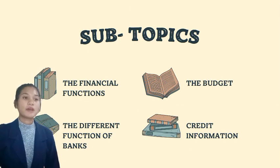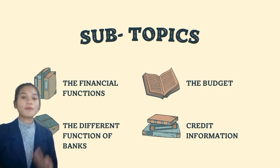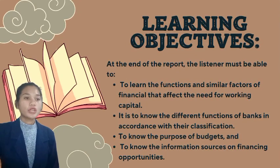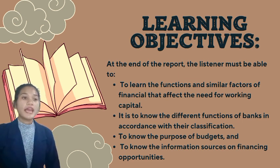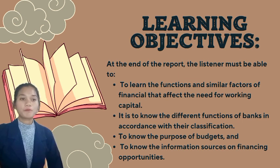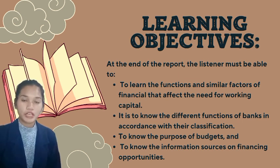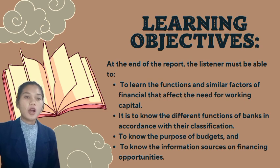Here are the subtopics I'm going to report. First, the financial function. Second, the different functions of banks. Third, the budget. And the last is credit information. The objectives are: at the end of the report, the listener must be able to learn the function and similar factors of financial, know the different functions of banks, know the purpose of a budget, and know the information sources of financing opportunities.